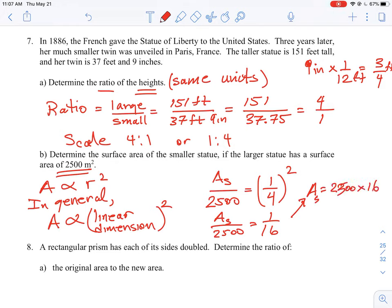So the total area of this would be 2,500 times 16, which would be... oh sorry, my mistake here. We want to solve for A sub s, which means we have to bring the 2,500 up and divide it by 16. So then the area of our small statue in square meters would be about 156.25.